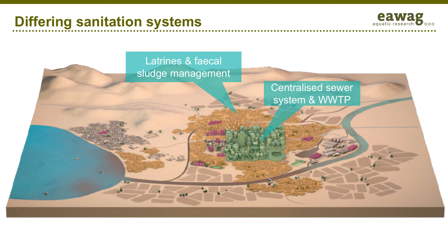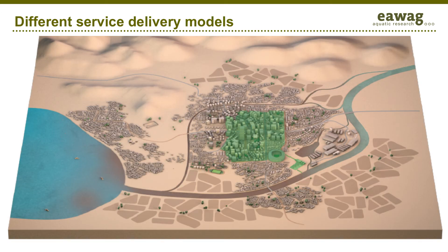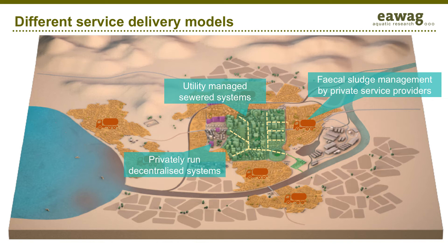There, proper fecal sludge management may be the solution. Depending on the situation, however, small-scale decentralized sewer systems and treatment plants may be another alternative, for example in residential compounds. Such diverse contexts within the same city call for different service delivery models associated with tailored sanitation systems, from utility-managed sewer systems through to private vacuum trucks for the collection and conveyance of faecal sludge from pit latrines and septic tanks.